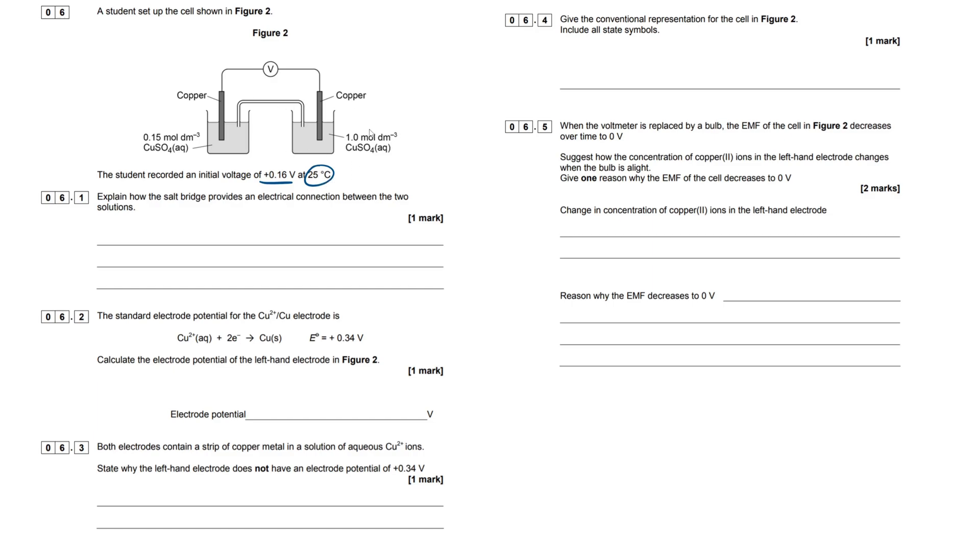Now remember, electro-potential is always done to this sigma symbol here, standard conditions. So we have to remember that the temperature, pressure, and concentration are always standard conditions for these cells. 25 degrees Celsius happens to be our standard condition of 298 Kelvin. We haven't looked at pressure because there's no gas present. The only other thing is concentration, and we'll come on to that in a little bit.